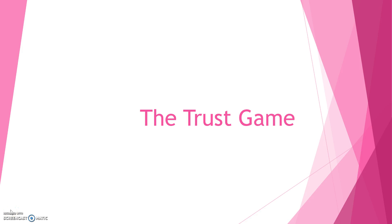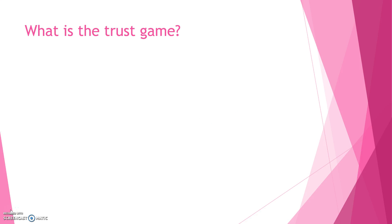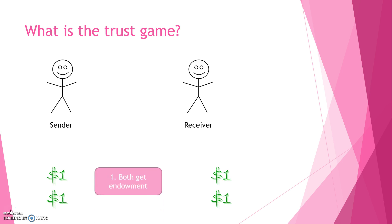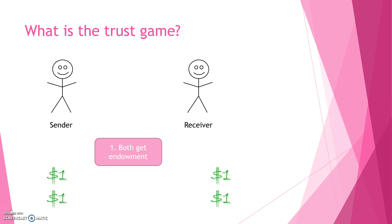In this video, I'll explain the Trust Game. The Trust Game is a common game in experimental economics, and it consists of two players, the sender and the receiver. At the start of the game, the experimenter gives both the sender and the receiver an endowment.